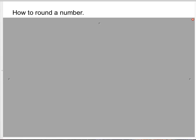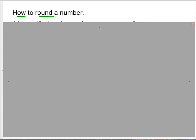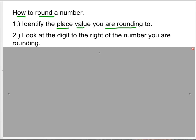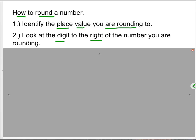Now before we begin going over what's in the book, I'd like to review a couple things about how you can round a number. So we're going to talk about some things for rounding numbers, and then practice some of those skills. The first thing you want to do is always identify the place value you are rounding to. Always identify that first. And then look at the digit to the right of the number you are rounding.